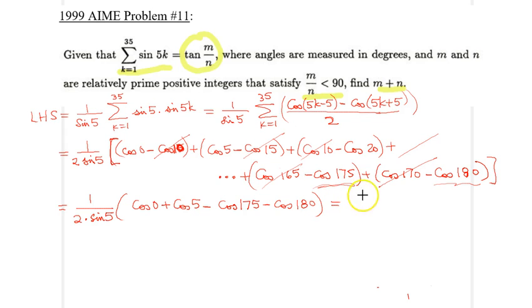So, therefore, from here, we would get 1 over 2 times sine of 5. And when you look inside, you realize cosine 0 here minus cosine 180 here. So, that's a plus 1, this is minus minus 1, which is another plus 1. So, I would have a 2 plus, and then a cosine 5, which is equal to minus cosine of 175.